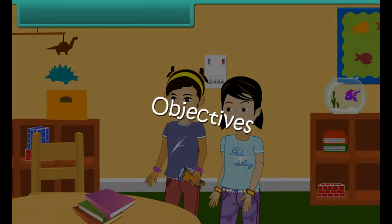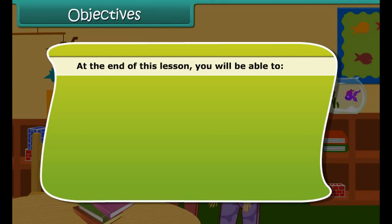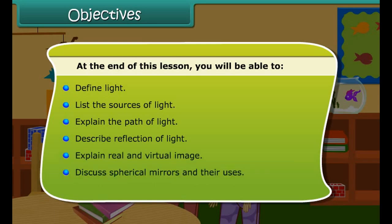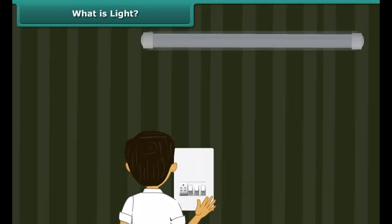Objectives. At the end of this lesson, you'll be able to: define light, list the sources of light, explain the path of light, describe reflection of light, explain real and virtual image, discuss spherical mirrors and their uses, and discuss types of lenses and their uses.